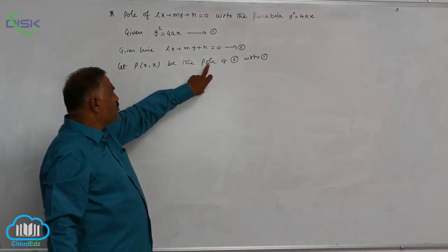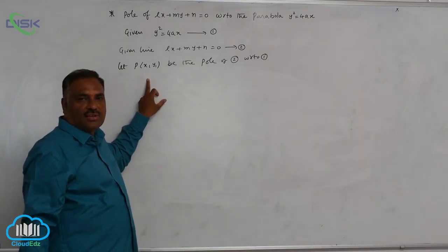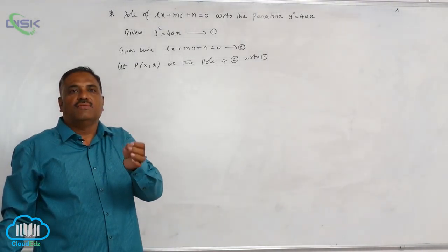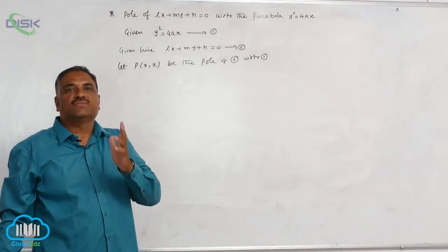Once you know the point here, immediately you can write the polar equation. We know that the polar equation of any point with respect to the parabola is S1 is equal to 0.